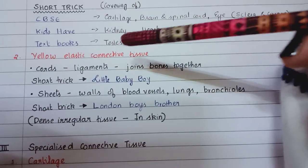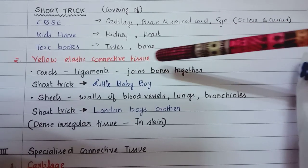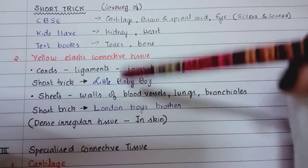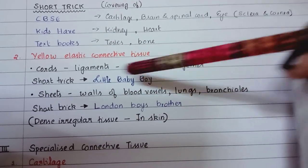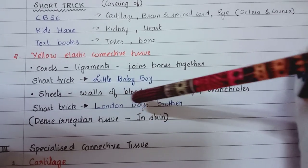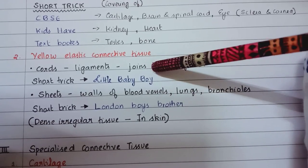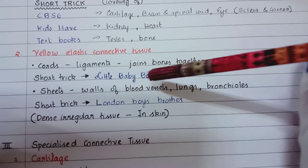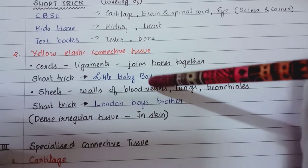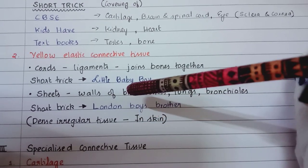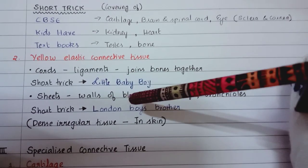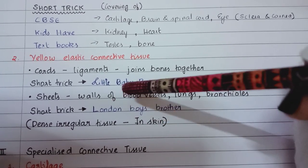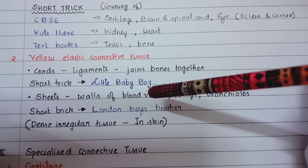Then we have elastic connective tissue - LO elastic connective tissue. Its cords are ligaments which join bones together. The sheets are the walls of blood vessels, lungs, and bronchioles. The short trick is London Boy's Brother: London for lungs, Boy's for blood vessels, Brother for bronchioles.